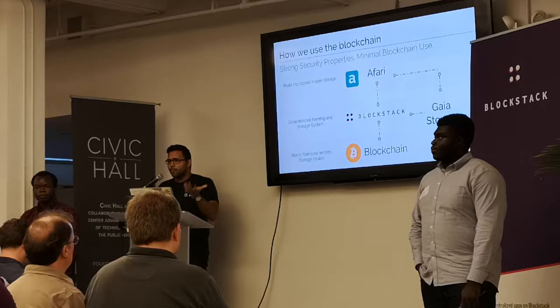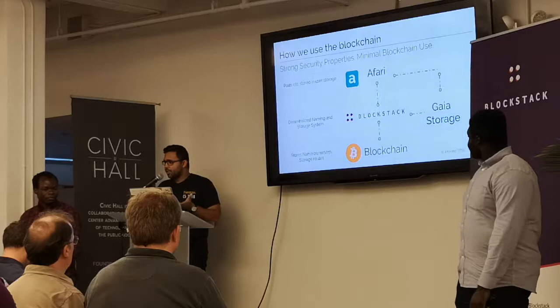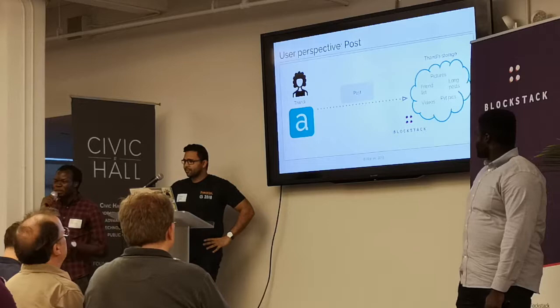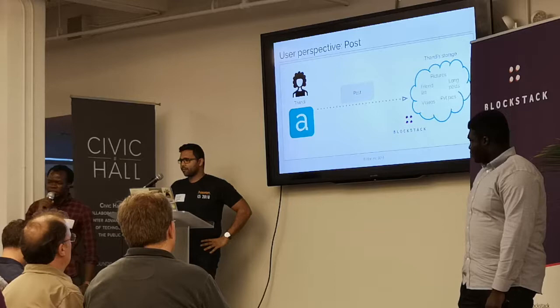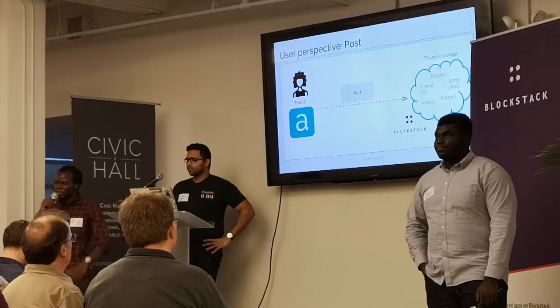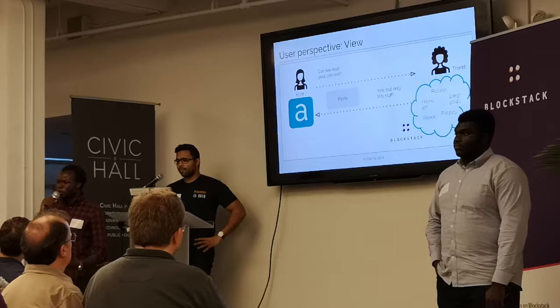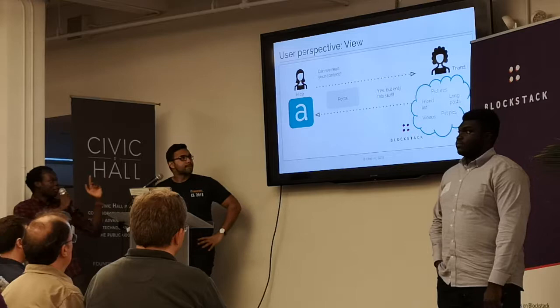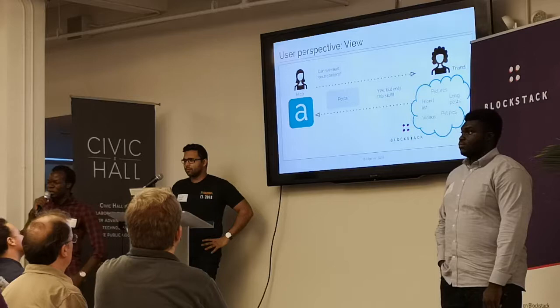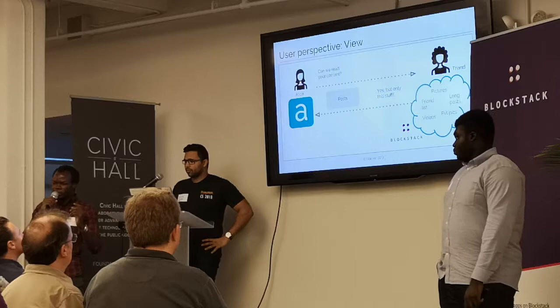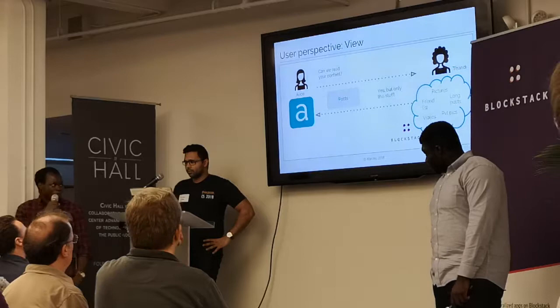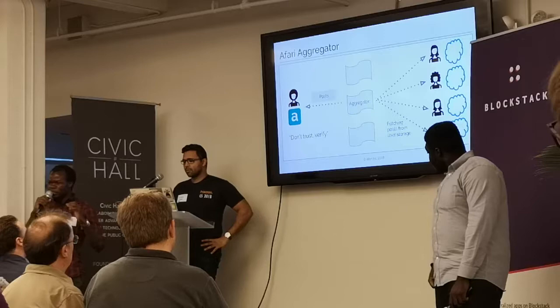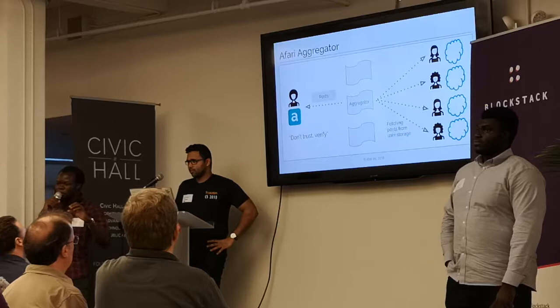Most users care about what the user experience looks like. When you post on Afari, your data is not stored with us — it's stored in a storage system that you, the user, control, in this case Gaia. So your friend list, posts, and photos are stored in Gaia. When someone else wants to see your data, you control whether they can see it and what exactly they can see. For example, with Alice and Tandy: if Alice wants to access data from Tandy, Tandy has to explicitly grant access to certain content but not other content. This gives users fine-grained control over what outside entities can see and access.